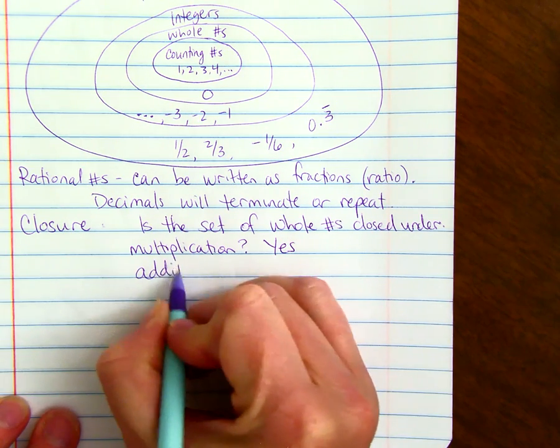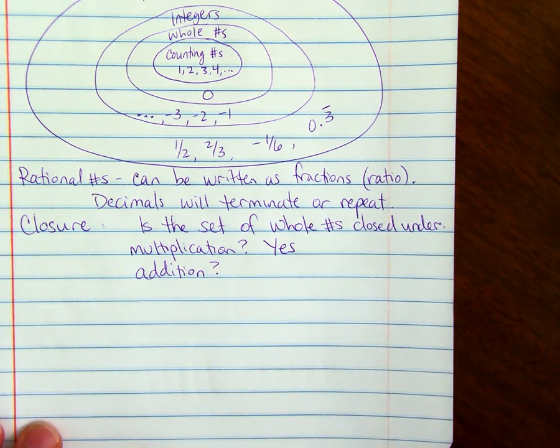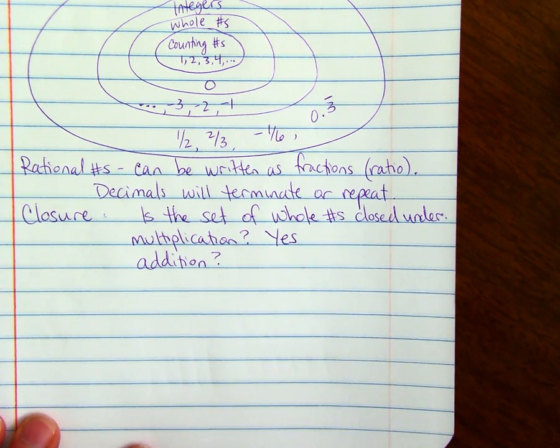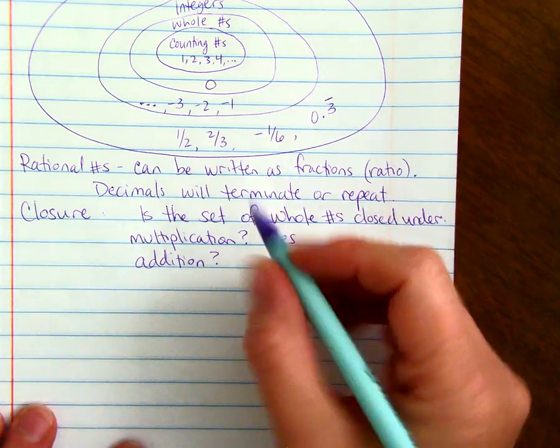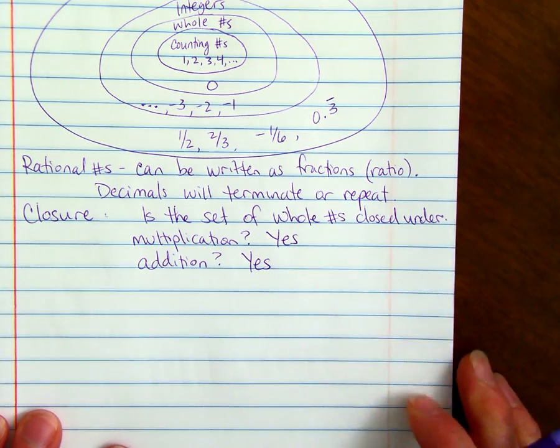How about addition? Is it closed under addition? If you add two whole numbers, you will always get another whole number. So it is closed under addition.